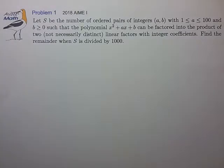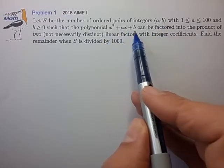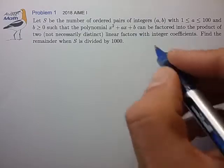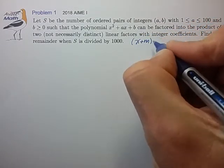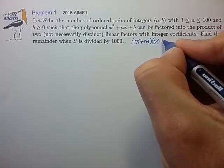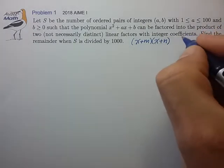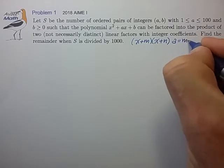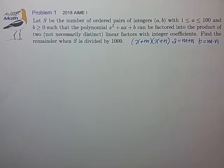We're looking for all pairs (a, b) such that we can write this quadratic as two integer factors, say (x + m)(x + n). In which case, we know that the coefficient a is equal to the sum m + n, and b is equal to the product m × n.